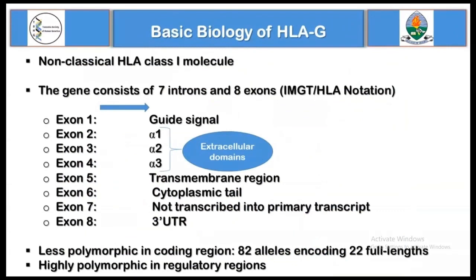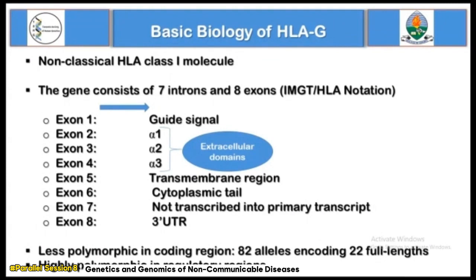Human leukocyte antigens are molecules expressed from genes in the major histocompatibility complex. These molecules can be classified into three classes: class one, class two, and class three. Class one molecules can further be grouped into classical and non-classical molecules, and HLA-G belongs to the non-classical HLA class one.